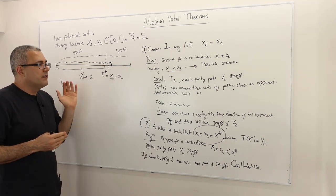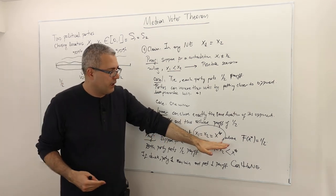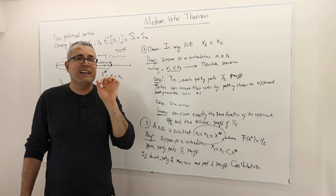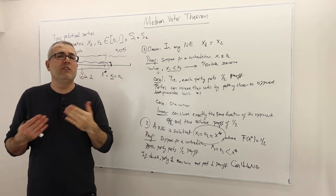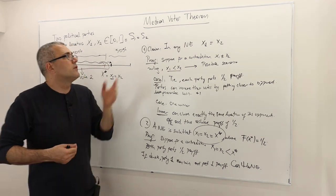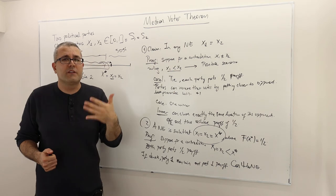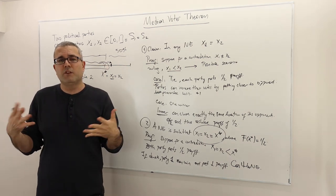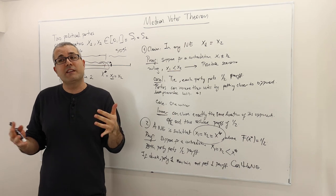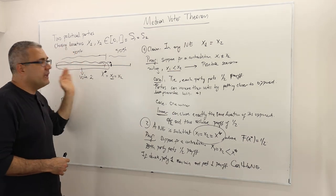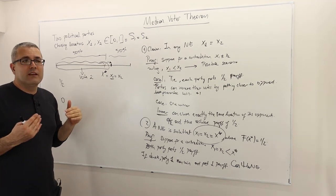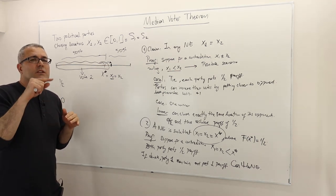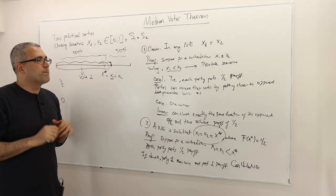This third step shows that the strategy profile where political party 1 and political party 2 both select the median voter's location x star is the only Nash equilibrium of this game. We call this conclusion the median voter theorem: in this simple environment with two political parties and a one-dimensional ideological spectrum, the political parties would locate their ideological position at the median voter. If there were more than two parties, things would be different, but for two parties this is the result.